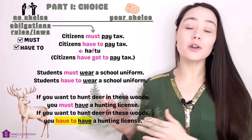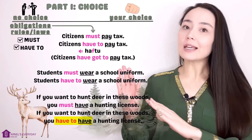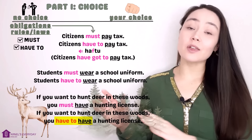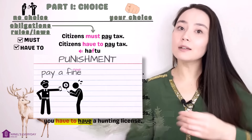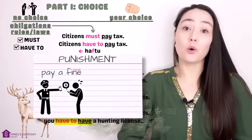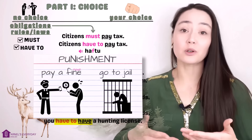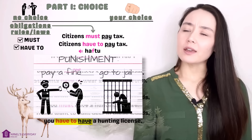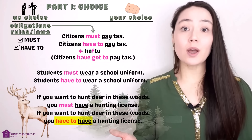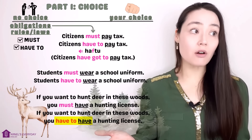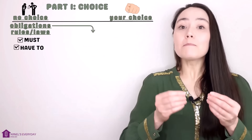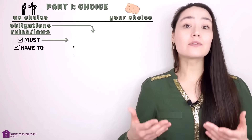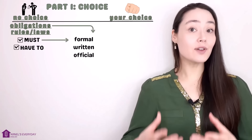With all of my examples so far, you can see there's no choice. If you don't do these things, there will be a punishment. You might need to pay a fine — that's money you need to pay, a penalty. Or maybe you might go to jail. So if we can use these verbs in the same way, are there no differences? Are they exactly the same?